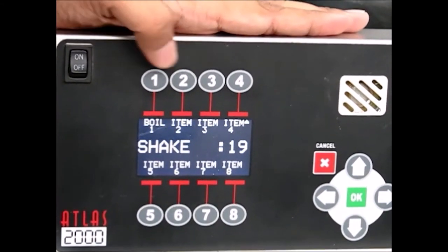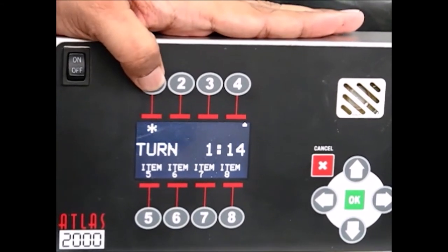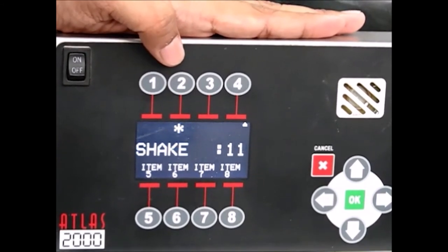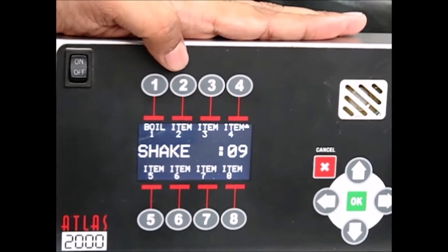Now press button 1 to check the time left for item 1. An asterisk alternates with the item name with the least time left.